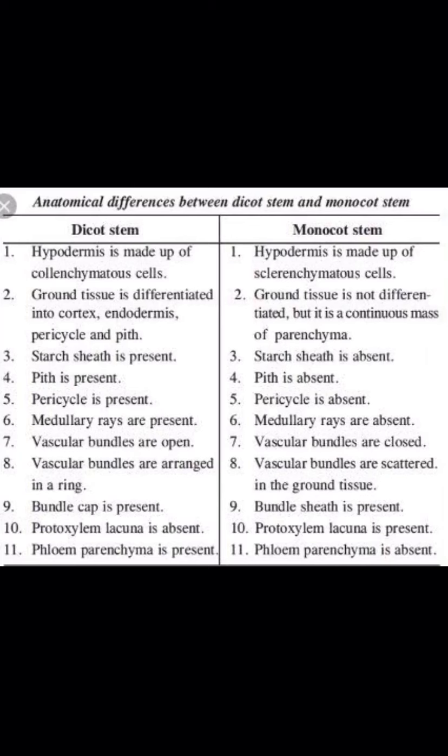A bundle cap is present in the dicot stem — sometimes it is part of the pericycle — while a bundle sheath is present around each vascular bundle in the monocot stem. Protoxylem lacuna is absent in the dicot stem, while in the monocot stem some protoxylem elements disintegrate and form a cavity called the protoxylem lacuna. Phloem parenchyma is present in the dicot stem but absent in the monocot stem. This concludes the internal structure of dicot and monocot stems after vascularization. Thank you.